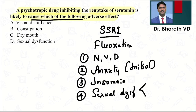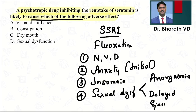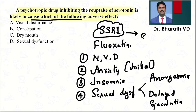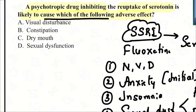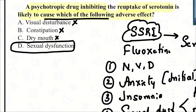SSRIs can cause sexual dysfunction — specifically anorgasmia and delayed ejaculation. SSRIs can also cause bruxism. If you combine an SSRI with another serotonergic drug, it can cause serotonin syndrome — tell me the drug of choice for serotonin syndrome. Coming back to the question: SSRIs do not cause visual disturbance, do not cause constipation (they cause diarrhea), and do not cause dry mouth. They do cause sexual dysfunction, so the answer is D.